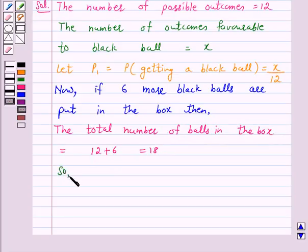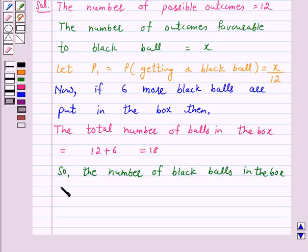So, the number of black balls in the box is equal to X plus 6.